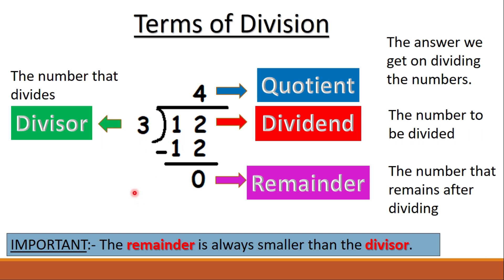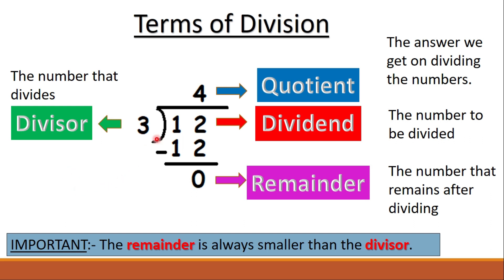Yes! We subtracted: 12 minus 3 equals 9, nine minus 3 equals 6, six minus 3 equals 3, three minus 3 equals 0. We subtracted 4 times, and that 4 is the quotient.